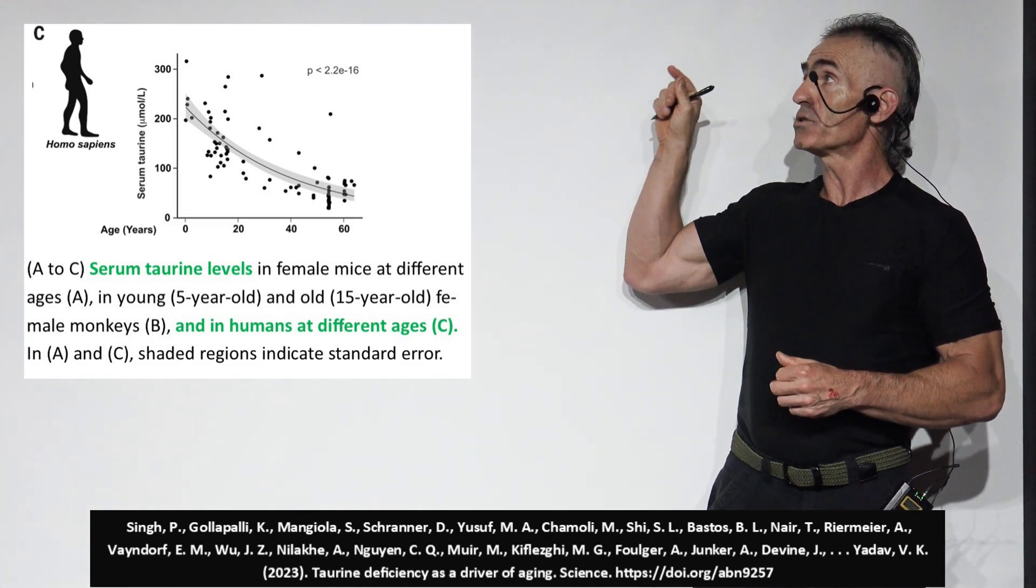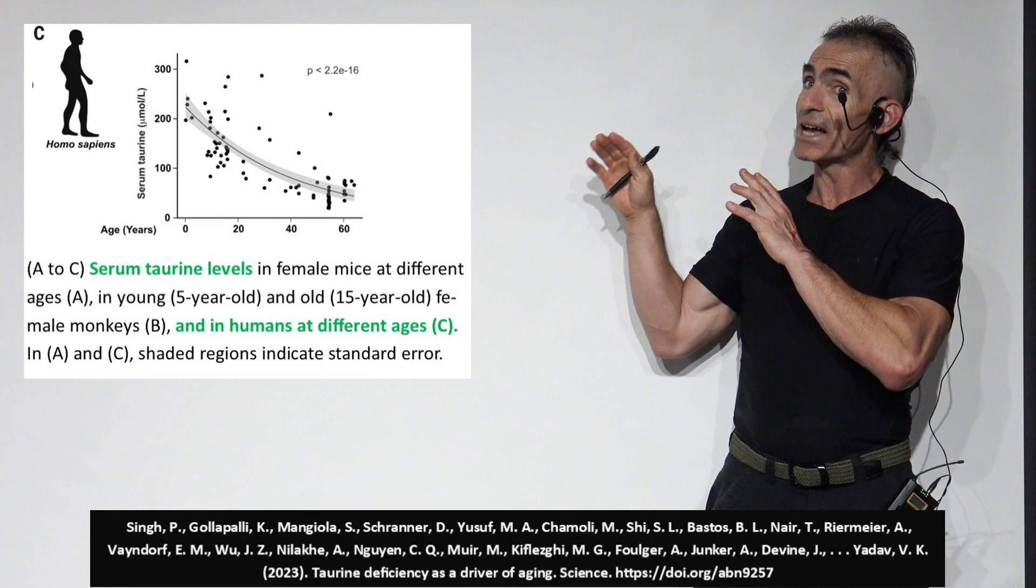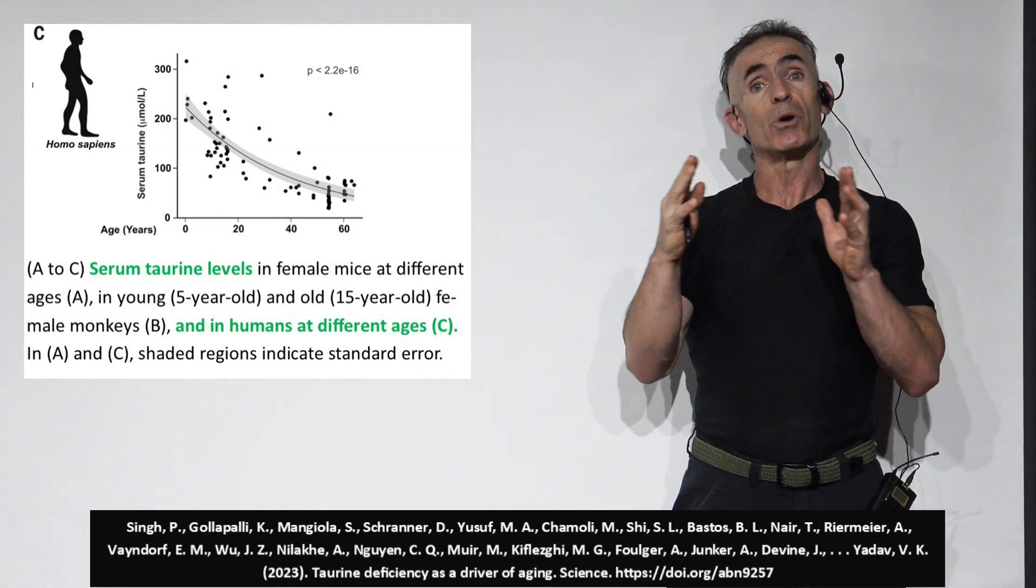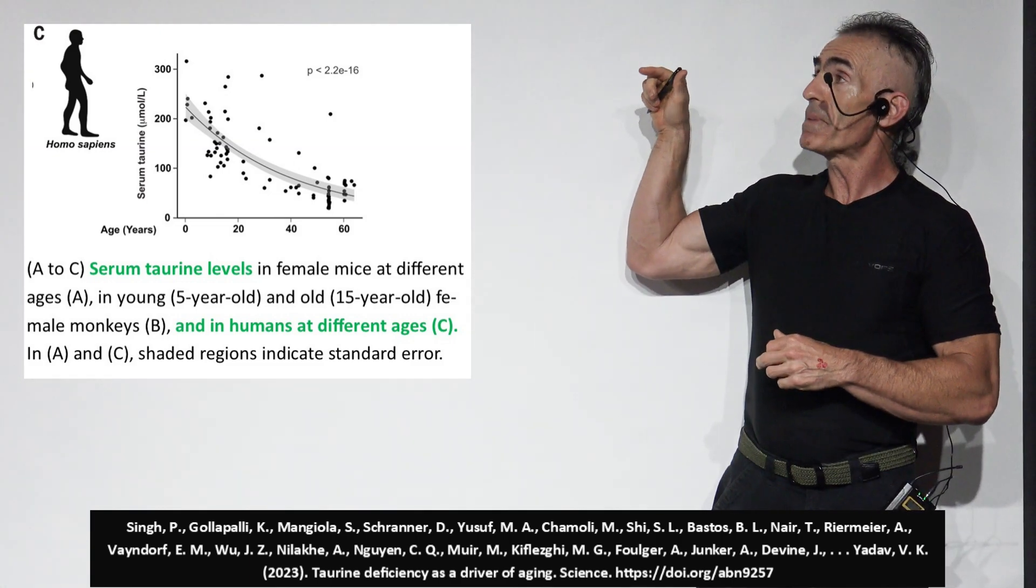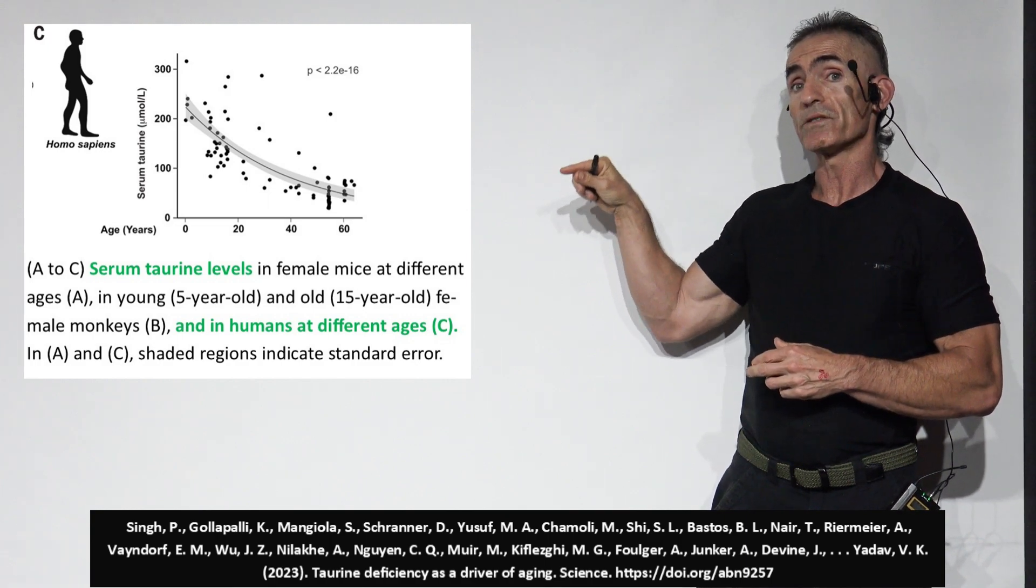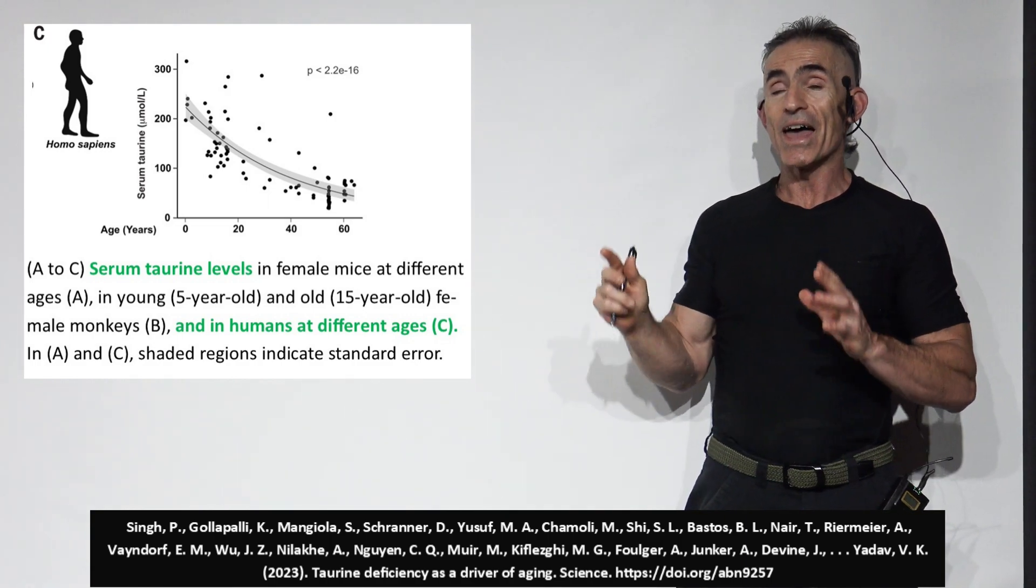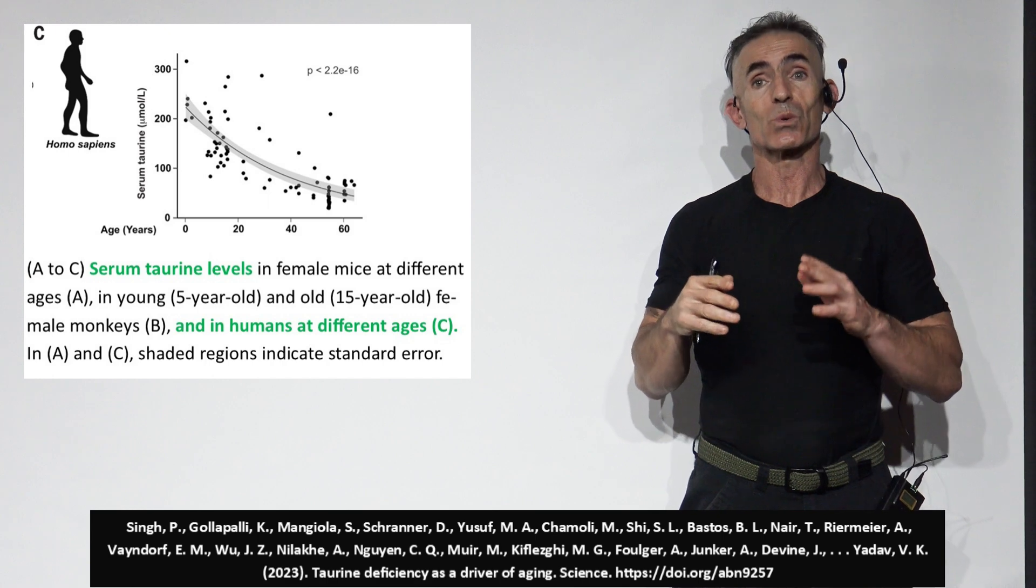What's interesting here is you begin to notice as an individual matures, and this happened among multiple species, basically the serum taurine levels began to decline. And that's when the discoveries began to arise.